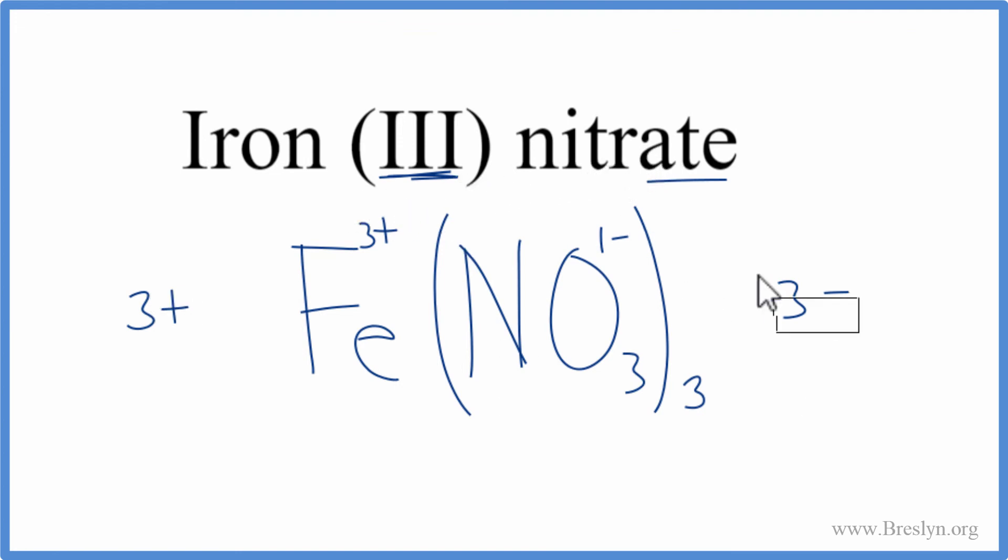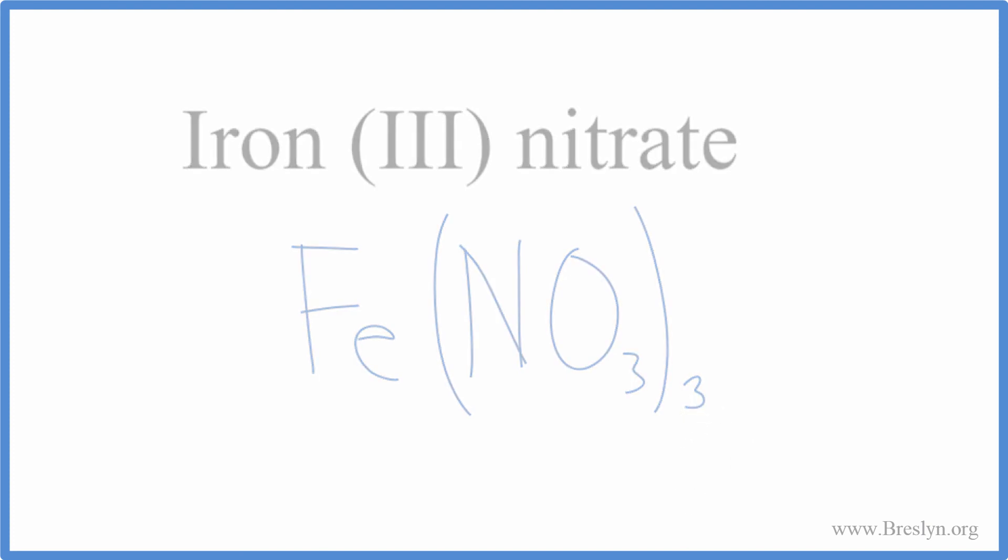Let's clean it up a little bit. And there you have it, the formula for iron three nitrate: Fe(NO3)3. This is Dr. V, and thanks for watching.